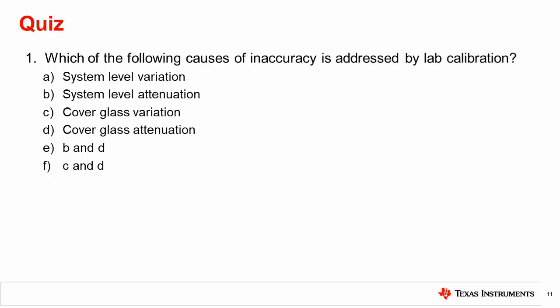Which of the following causes of inaccuracy is addressed by lab calibration? The correct answer is E. Both system level and cover glass attenuation will be compensated in lab calibration. However, unit to unit variation is not able to be corrected without production line calibration on every unit. This is discussed in the next video.